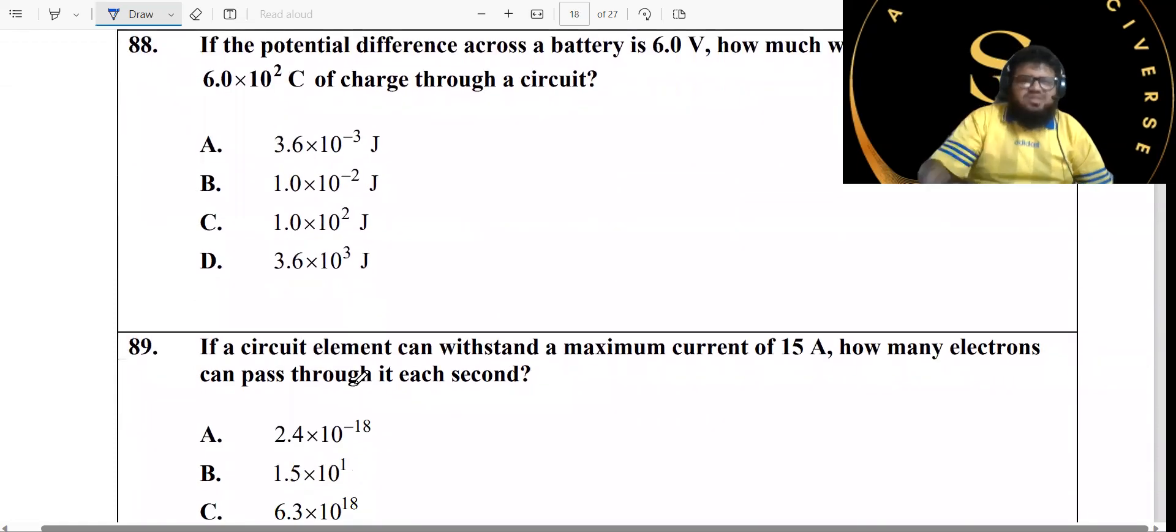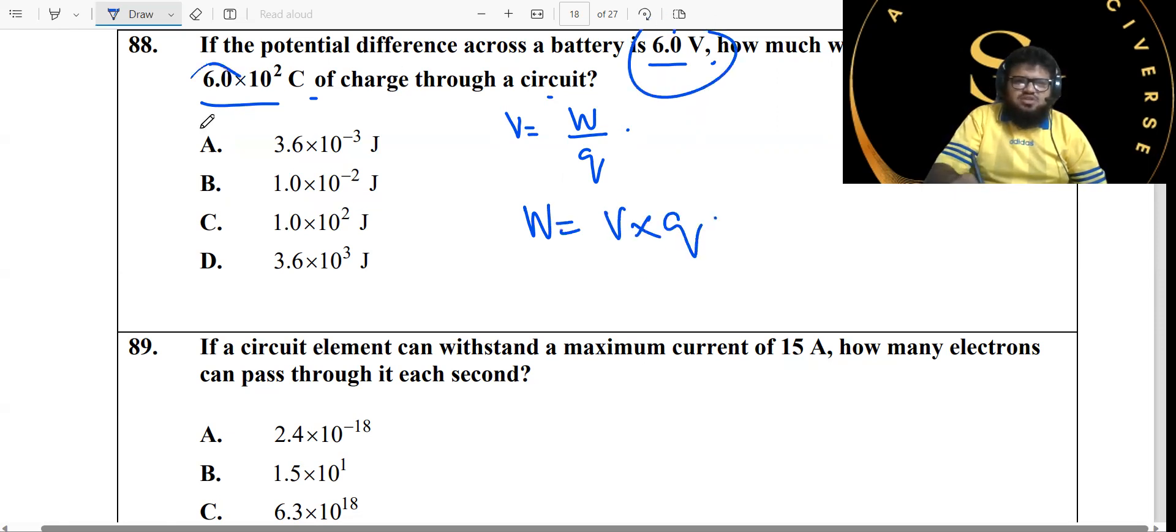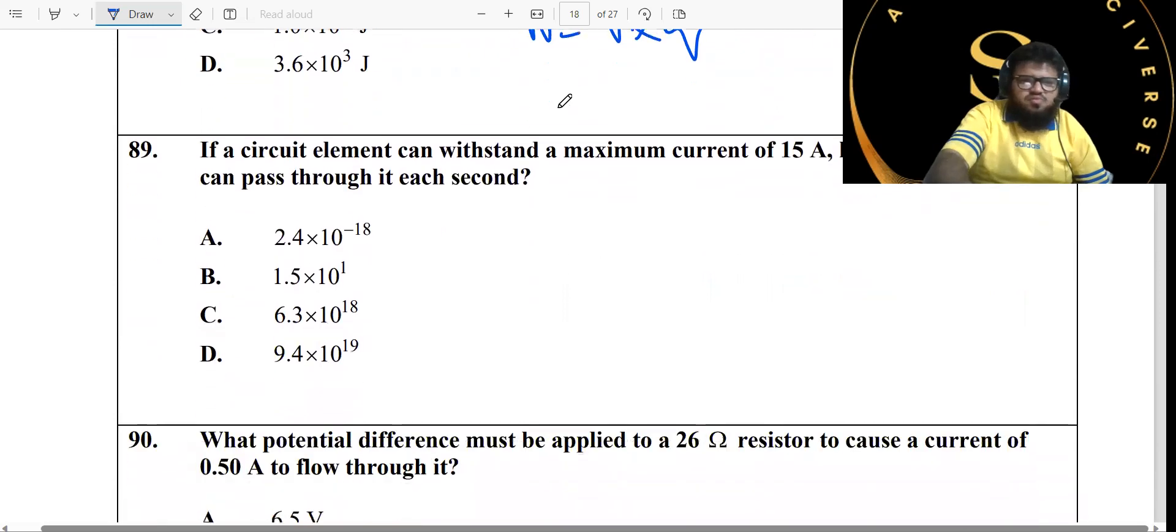If the potential difference across a battery is 6 volts, how much work would be required to move a charge of this much through the circuit? This is child's play. All you need to do is calculate the work done. What's the formula for calculation of potential difference? Just work done by unit charge. Work done by unit charge will move around the circuit. So to calculate that work, it's just going to be the voltage multiplied by the charge. Just multiply these to get the answer. Simple. Moving on.